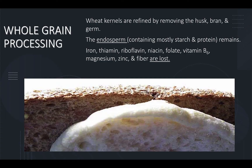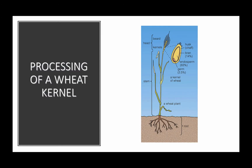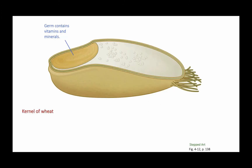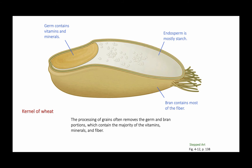Let's talk about the processing of grains, specifically wheat flour. Here's a picture of a wheat kernel. The germ contains vitamins and minerals. The bran contains mostly fiber. The endosperm is mostly starch with a little bit of protein. The processing of the kernel involves removing the germ, the bran, and the husk — though we don't eat the husk anyway. The germ and the bran are where most of the vitamins, minerals, and fiber are found.